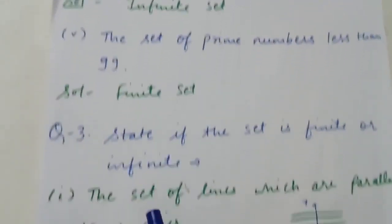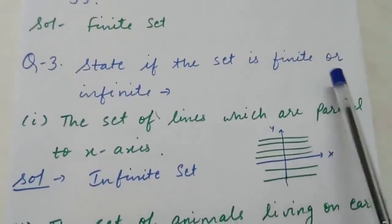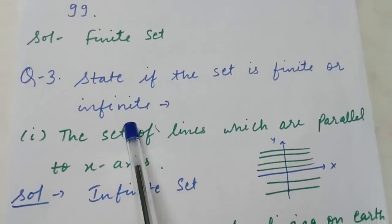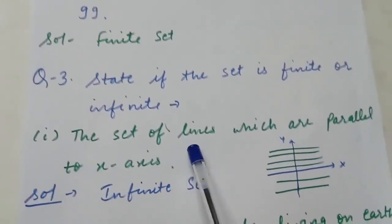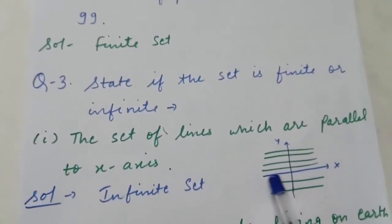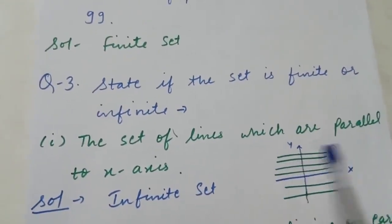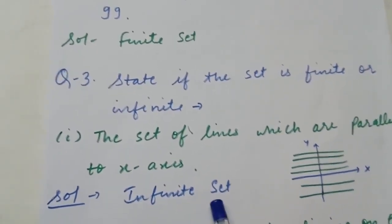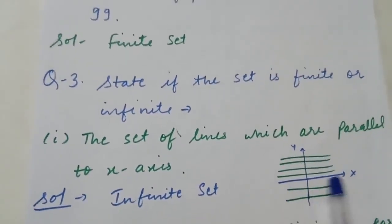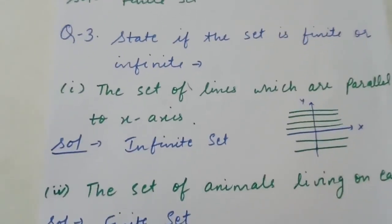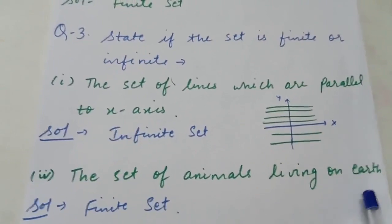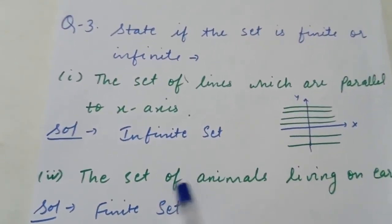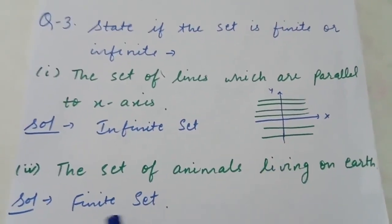Question 3: state if the set is finite or infinite. The set of lines parallel to the x-axis — there can be infinitely many lines parallel to the x-axis, so this is an infinite set. The set of animals living on earth — the number of animals is countable and finite, so this is a finite set.